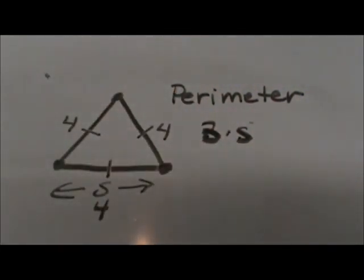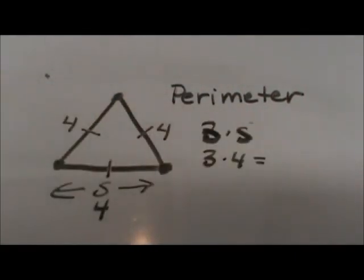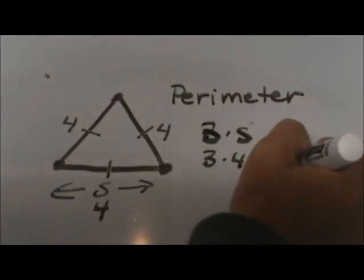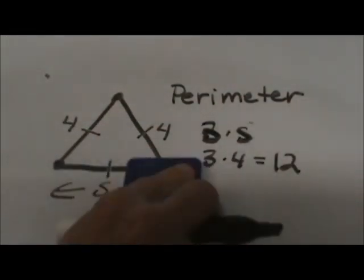It's a triangle with all equal sides so just 3 times 4 would give us 12. So the length of the perimeter would just simply be 12. Now let's try one that's a little bit harder.